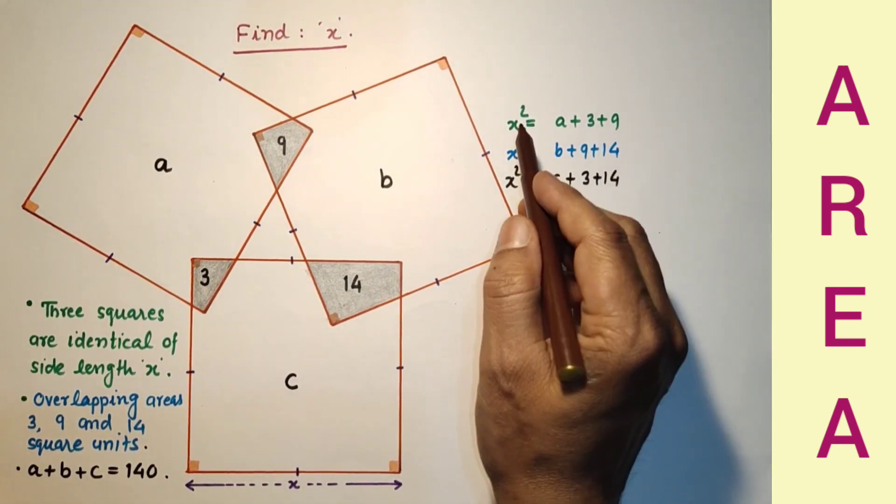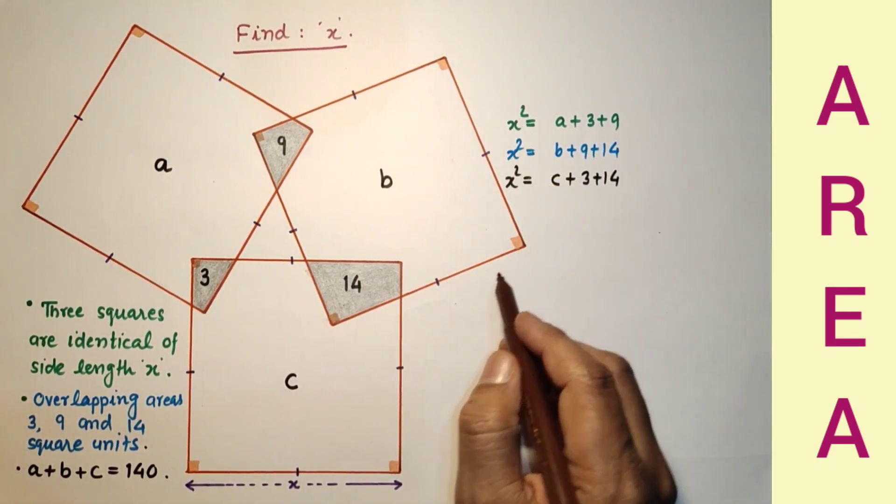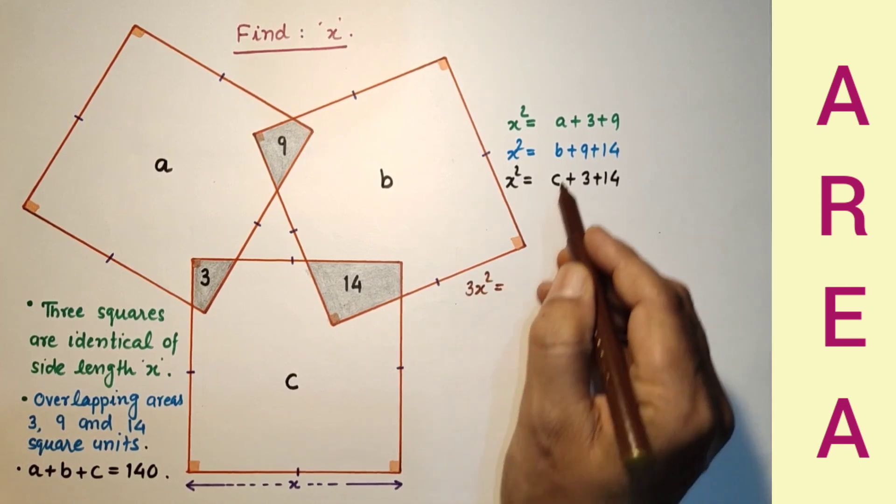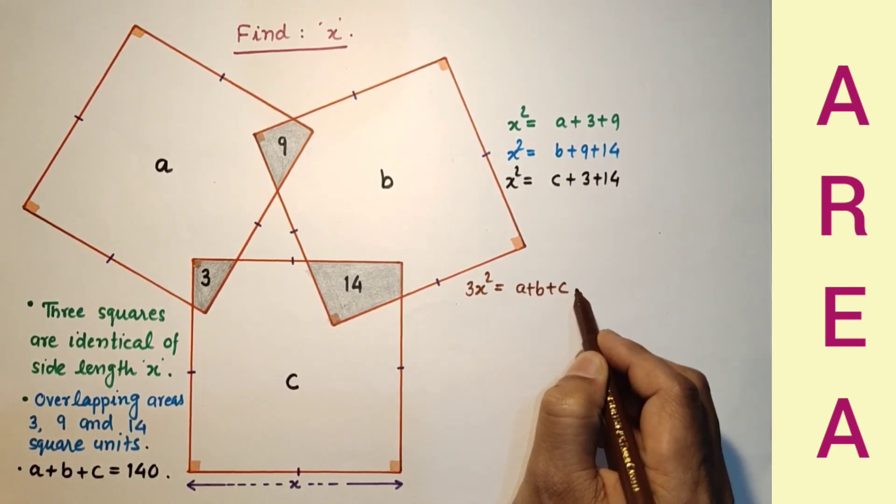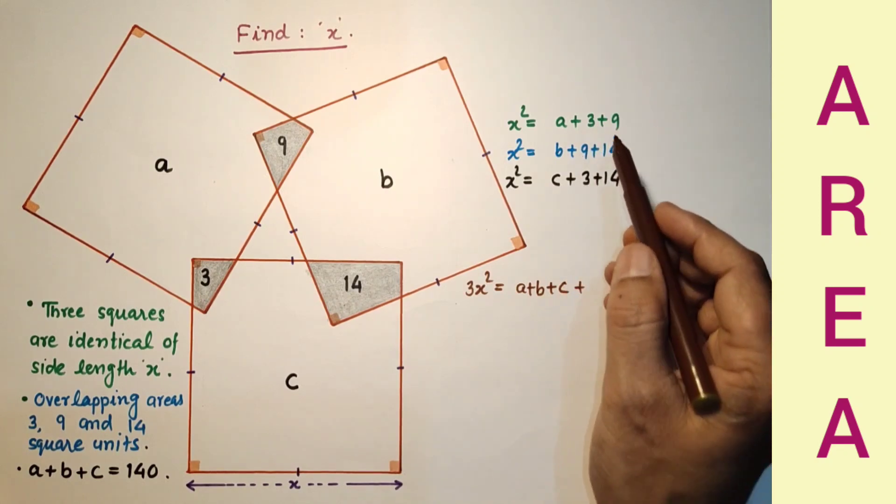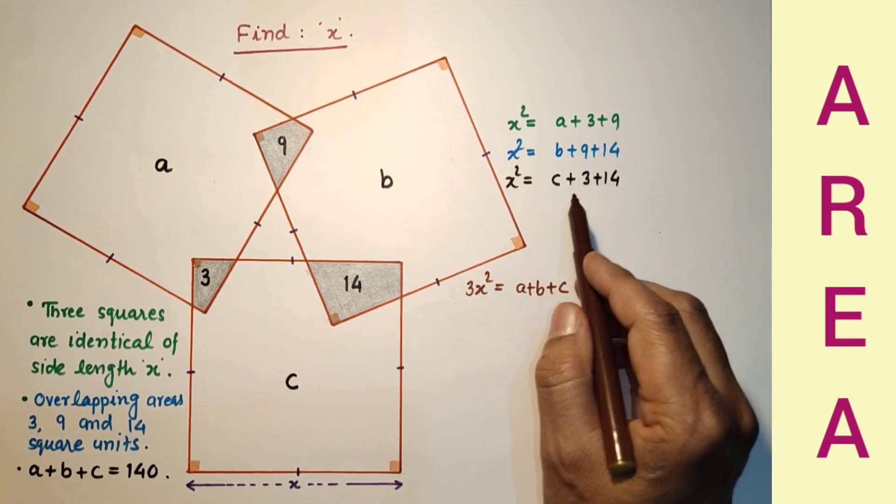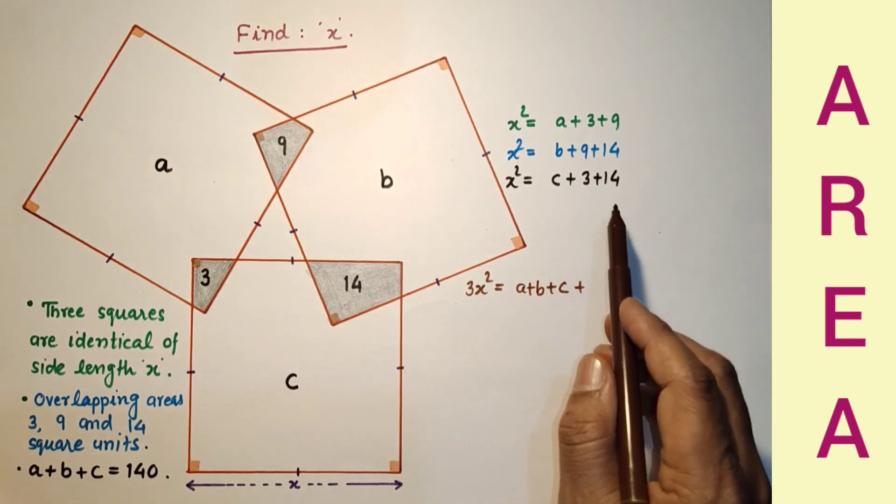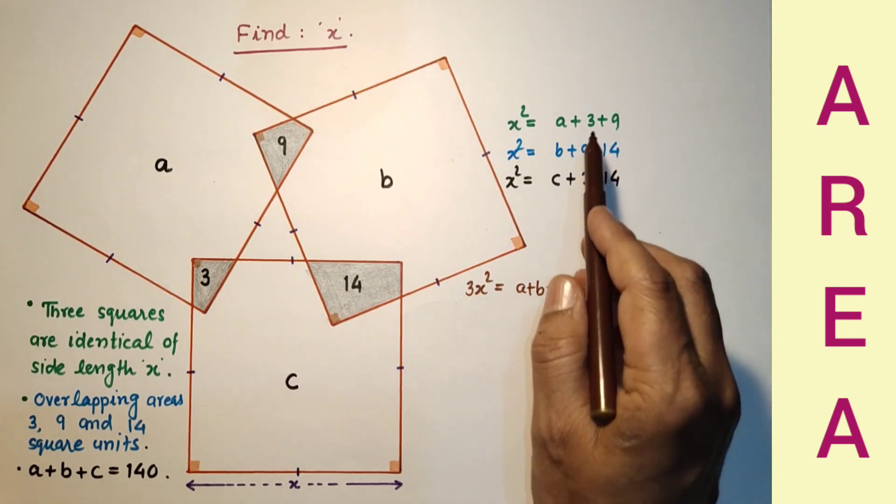Adding these three, we will get 3x squared equals A plus B plus C plus the sum of these: 3 plus 9, 9 plus 14, 3 plus 14, which is 12, 23, and 17. 17 and 23 is 40 plus 12 equals 52.